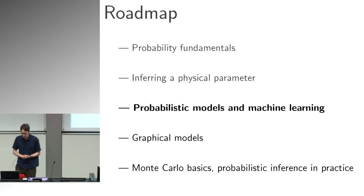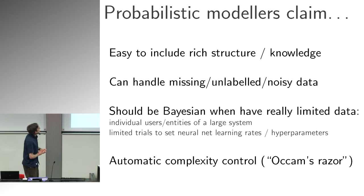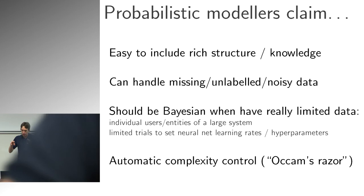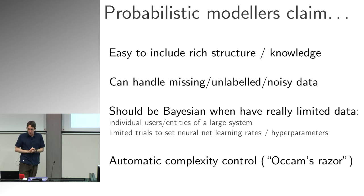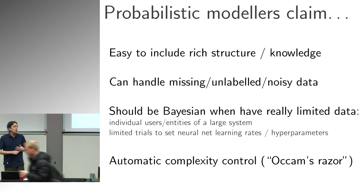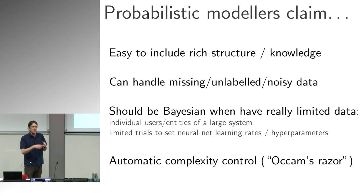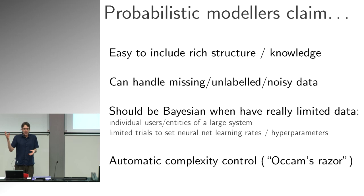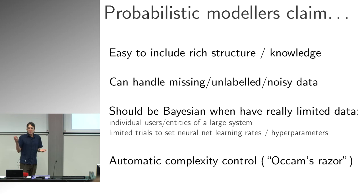Probabilistic modelers claim it's easy to write down rich structure in your model — if you've got knowledge of a dynamical system, you can just write it down and use it. Another motivation that applies to machine learning is that with a probabilistic framework, you can trivially deal with things like missing data, unlabeled data, and noisy data. In machine learning there might be whole separate papers on how to adapt a method to deal with unlabeled data, whereas in probabilistic models it's trivial — that node in your graphical model is simply unobserved.